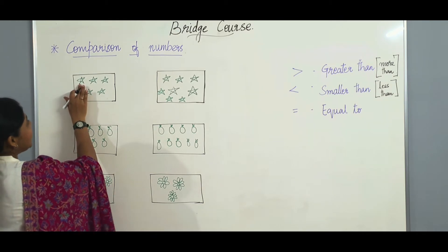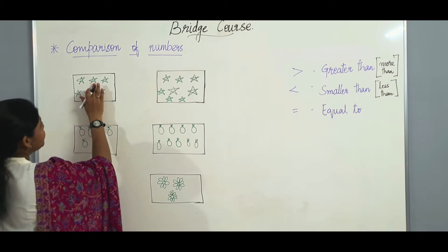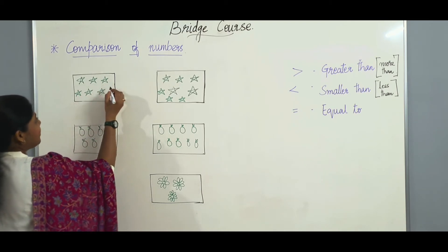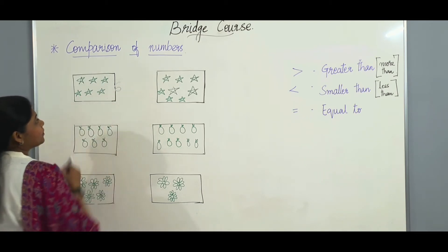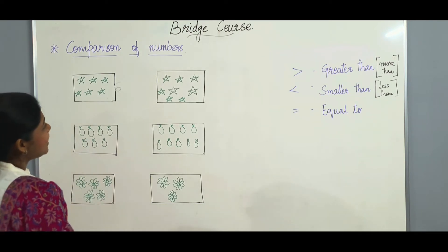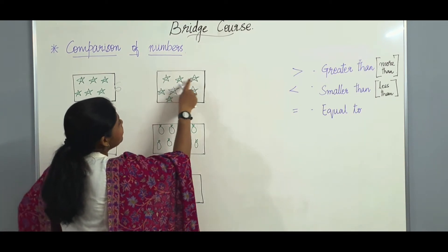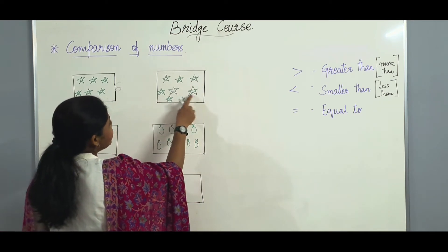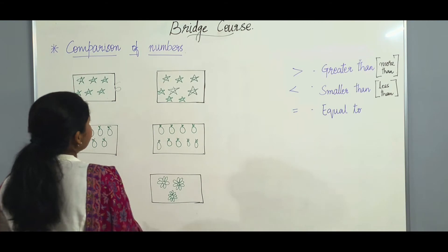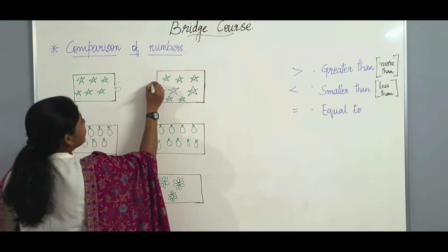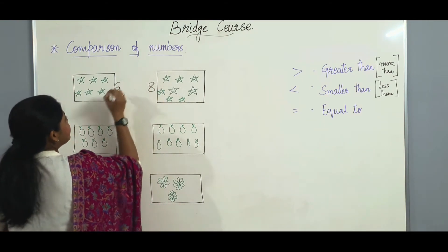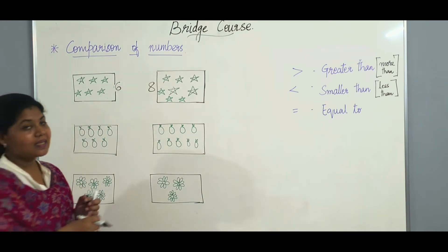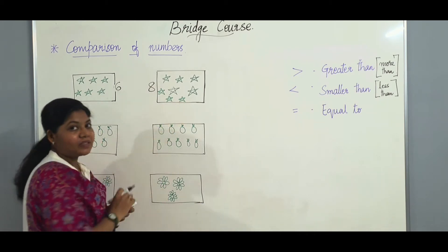Here on the left side I have 1, 2, 3, 4, 5 and 6. So here I have 6 stars. And on this side I have 1, 2, 3, 4, 5, 6, 7 and 8. So on this side I have 8 stars. So which side has more stars? Yes, the right side has more stars.